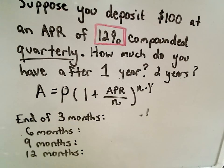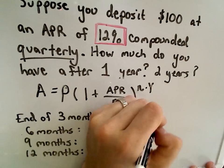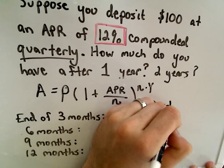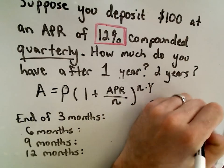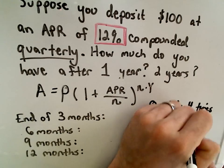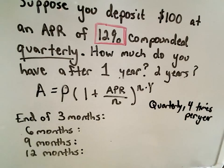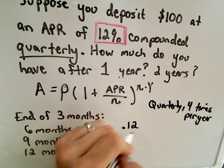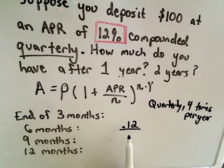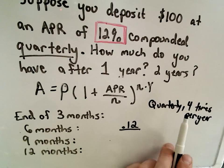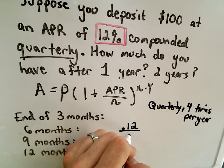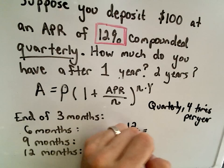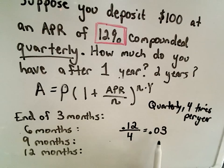What's going to happen is every three months—quarterly means every three months or four times per year—they're not going to actually give you 12%. What they do is they take that APR and divide it by the number of compoundings per year. So instead of giving you 12%, they're going to tack on 3% four separate times.